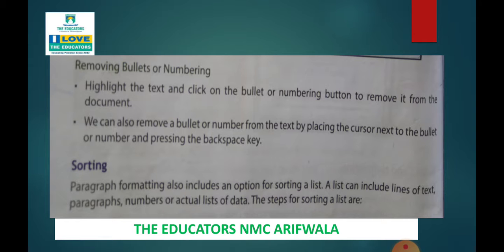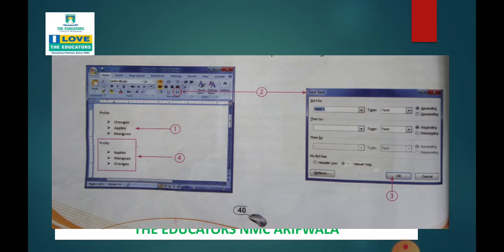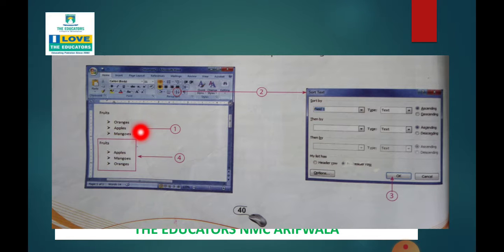The steps for sorting a list are as follows. Students, yehaan peh mein aapko image ke saath show karthi ho ke kis tarah se sorting ki gai hai. Basically, fruits ke name given hai: orange, apple, and mango. In MS Word ke andher yeh three name type kiya gai hai. Isko abh humne arrange karna hai, sort form mein show karna hai. Toh fruits ko jab arrange karenghe, alphabetic order ke andher apple ko first pe, phir mango, phir orange likhenge.